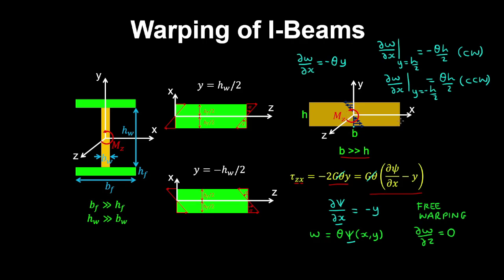So what this would look like is as follows. The warping rotation at the bottom is anti-clockwise, and it is constant along the x direction — it only depends on y. Therefore the section will displace in a negative z direction on the left and a positive z direction on the right. At the top, the warping rotation is clockwise, so the section warps in a positive z direction on one side and a negative z direction on the other.